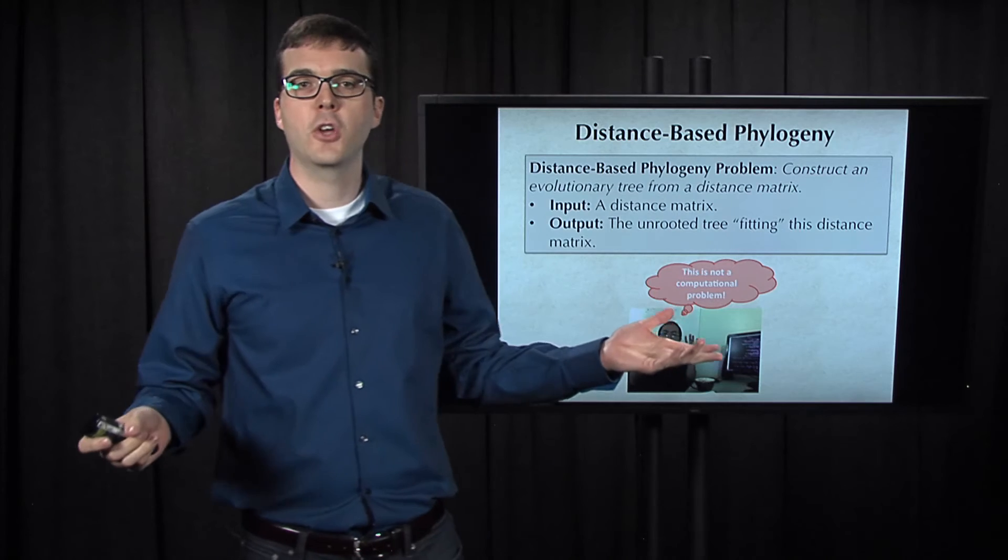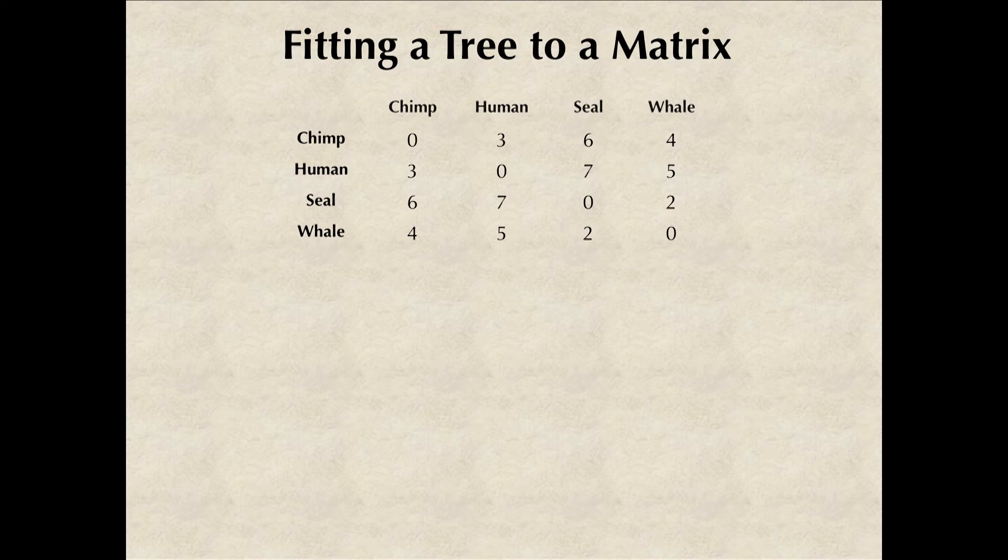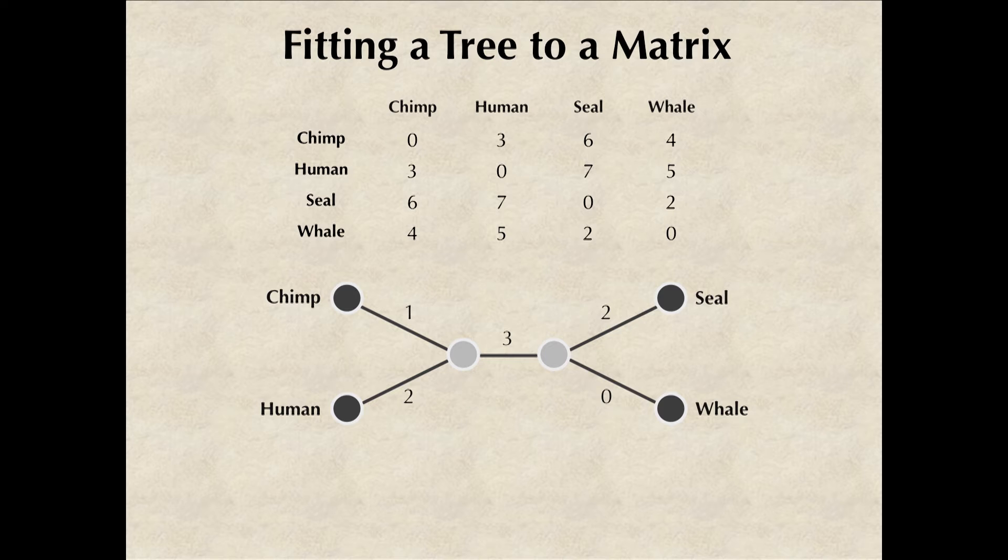Of course, I should have known that Shawn would somehow show up today. The problem that he has is that we have been careless and we haven't defined what we mean for a tree to fit a distance matrix. If we come back to the toy distance matrix that we had for four species, then I will go ahead and show you a tree that fits it.